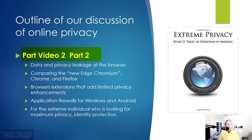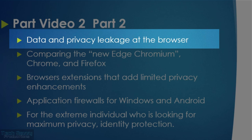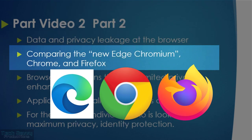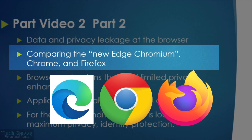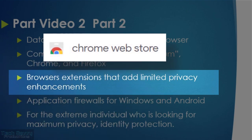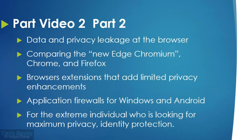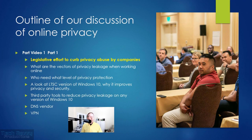Part two will focus on data and privacy leakage at the browser — the most used application in computing today. We'll compare the new Edge Chromium browser to Chrome and Firefox, primarily in the Windows world. We'll cover browser extensions that add limited privacy enhancements, application firewalls for Windows and Android, and for the extreme individual looking for maximum privacy and identity protection, I'll give you some good ideas. Although I'm starting with PowerPoints, we'll quickly get to hands-on technical discussion.